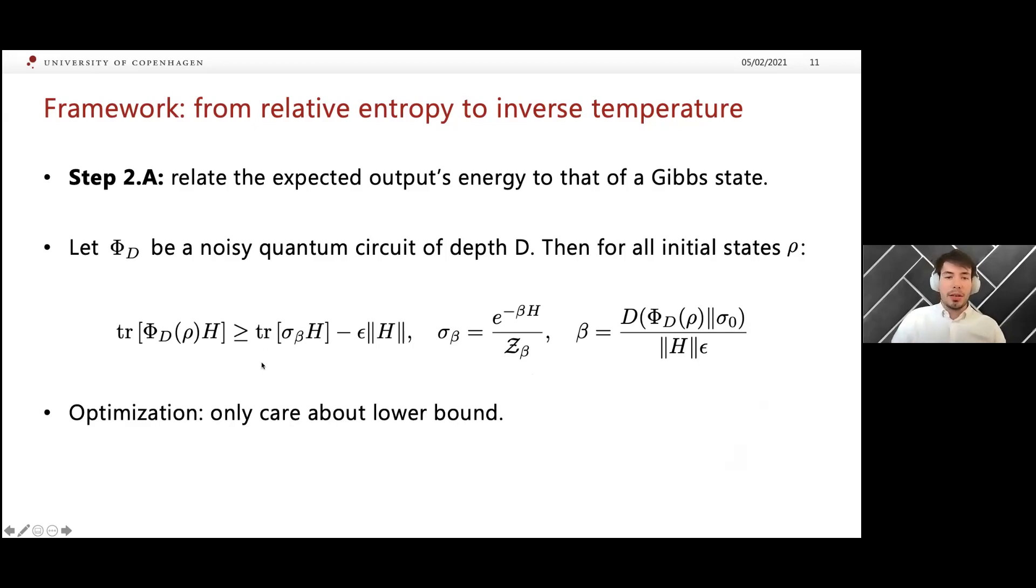This is a one-sided inequality. But as we are interested in optimization, we only care about this lower bound, because if the energy of this Gibbs state is lower than that of the Hamiltonian, then for this optimization problem where we want to minimize this energy, that's all we care about. Note that I'm not saying that this Gibbs state approximates the output of the quantum circuit for other observables. I'm just saying that the expected energy is similar. This rest term over here is usually of multiplicative order.